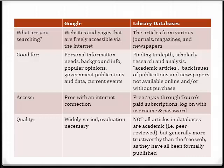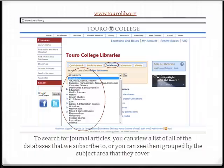This is where you'll find the most in-depth, high-quality research on your subject that has been vetted and approved by other experts in the field. To search for academic journal articles, you can view a list of all of the databases that Toro subscribes to, or you can see them grouped by the subject area that they cover.